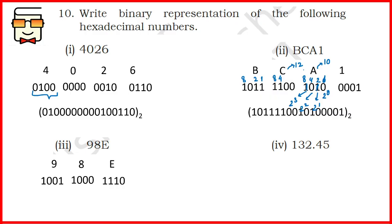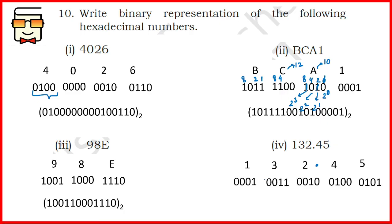For the third part, write the binary representation for each hexadecimal digit, combine them, and get the answer. For the last part, do the same process but be very careful of the point. Convert each digit to its binary representation, remember where the point lies, and in the final answer keep the point and combine all representations together.